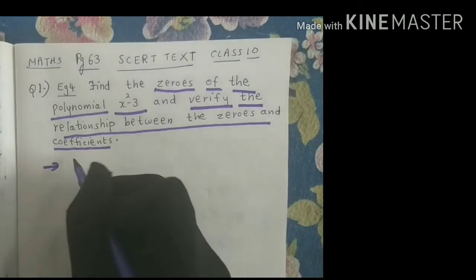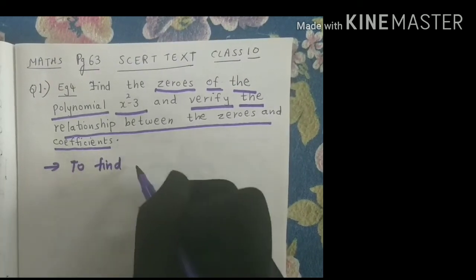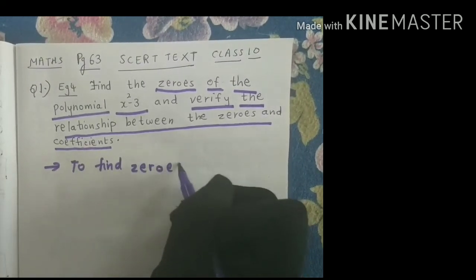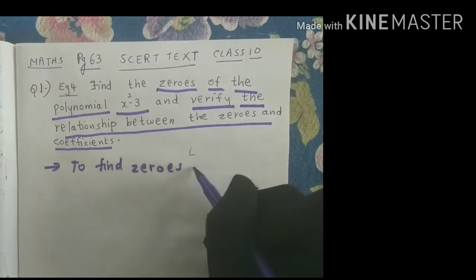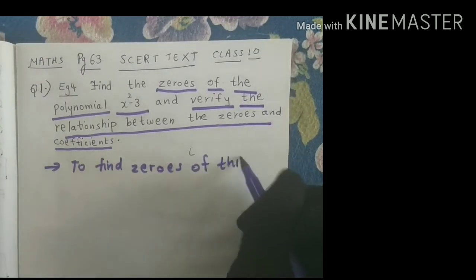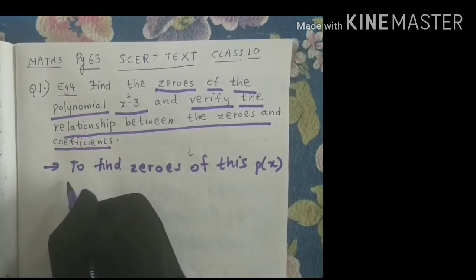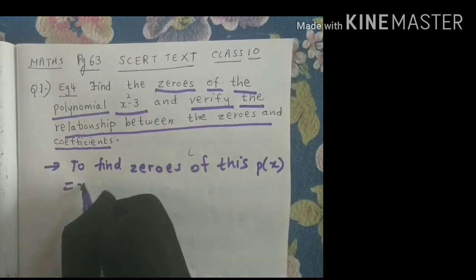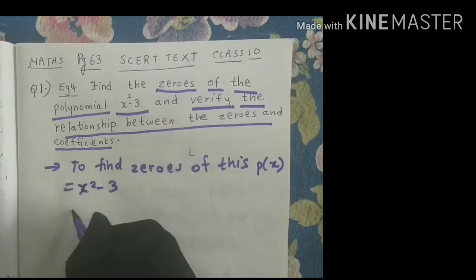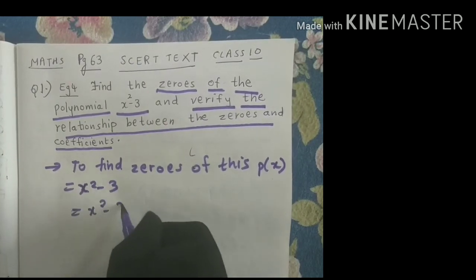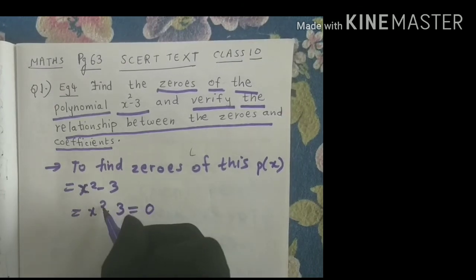First, for finding out the zeros of the polynomial, I need to see how I can find the zeros of this polynomial p(x). I will assume this polynomial p(x) to be x squared minus 3. Whenever we want to find zeros of a polynomial, we have to equate the equation to 0. So I am equating x squared minus 3 to 0.